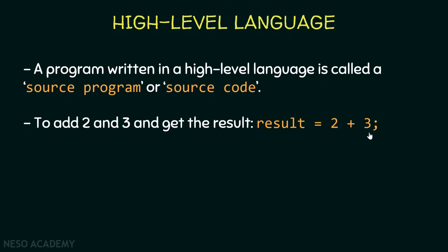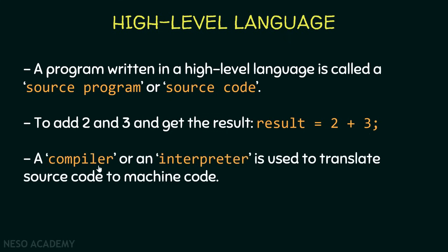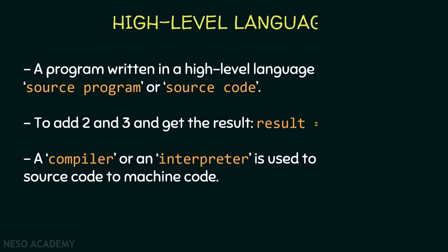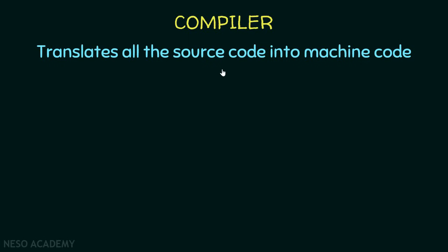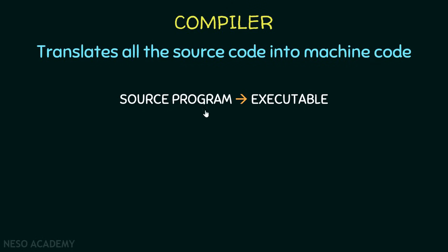Just like before, this statement written in a high-level programming language cannot be executed directly — we should translate it to machine code first. We can use either a compiler or an interpreter to translate source code to machine code. Remember, source code is a program written using a high-level programming language. A compiler translates all the source code into machine code. We have a source program, we use a compiler to generate an executable — a file that can be executed by our computer.